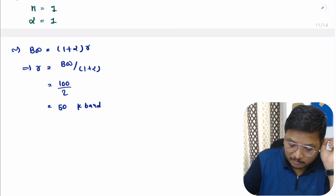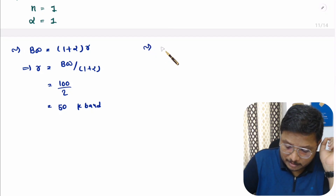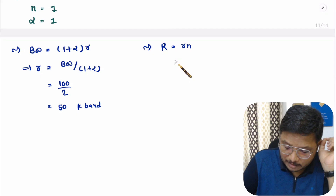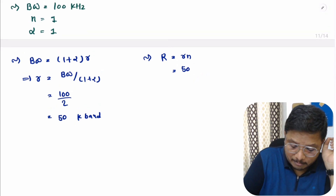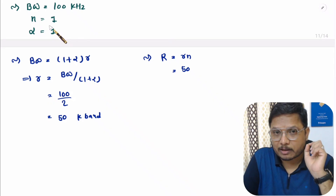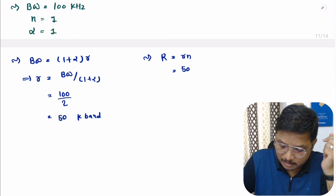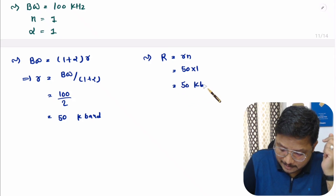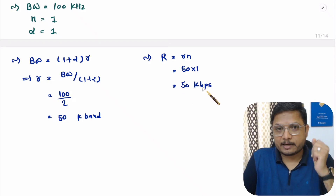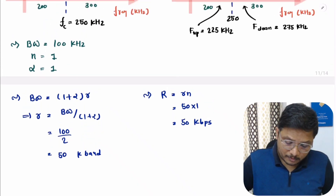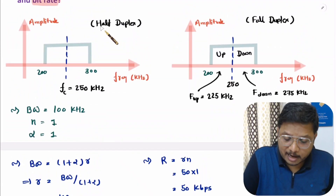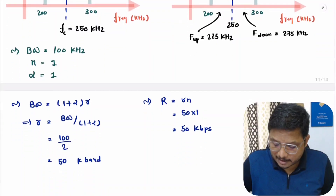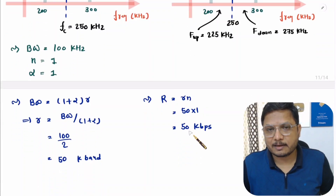Now from baud rate one can calculate bit rate. Bit rate R equals baud rate into n, where n is number of bits per symbol. Here baud rate is 50 kilo baud and for binary n equals 1, so the bit rate is 50 kbps. So if you consider half duplex communication, we have a bit rate of 50 kbps.